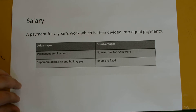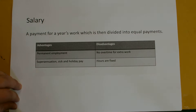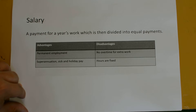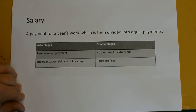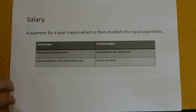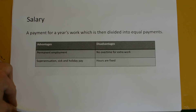Salary — a payment for a year's work, which is then divided into equal payments. The advantages of a salary are you can get permanent employment, superannuation, and sick and holiday pay. Disadvantages include no overtime for extra work and the hours are fixed.